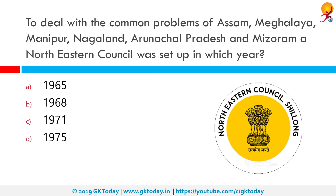To deal with the common problems of Assam, Meghalaya, Manipur, Nagaland, Arunachal Pradesh and Mizoram, a Northeastern Council was set up in which year? The correct answer is 1971. The Northeastern Council is a statutory advisory body established in 1971 by the Northeastern Council Act 1971, for three key objectives: balanced development of the Northeastern region, effecting better interstate coordination, and maintaining security and public order in the region. The council consists of eight member states — Arunachal Pradesh, Assam, Manipur, Meghalaya, Mizoram, Nagaland, Sikkim and Tripura. In 2002, Sikkim became the eighth member state. The secretariat or headquarters of the council is located at Shillong in Meghalaya.